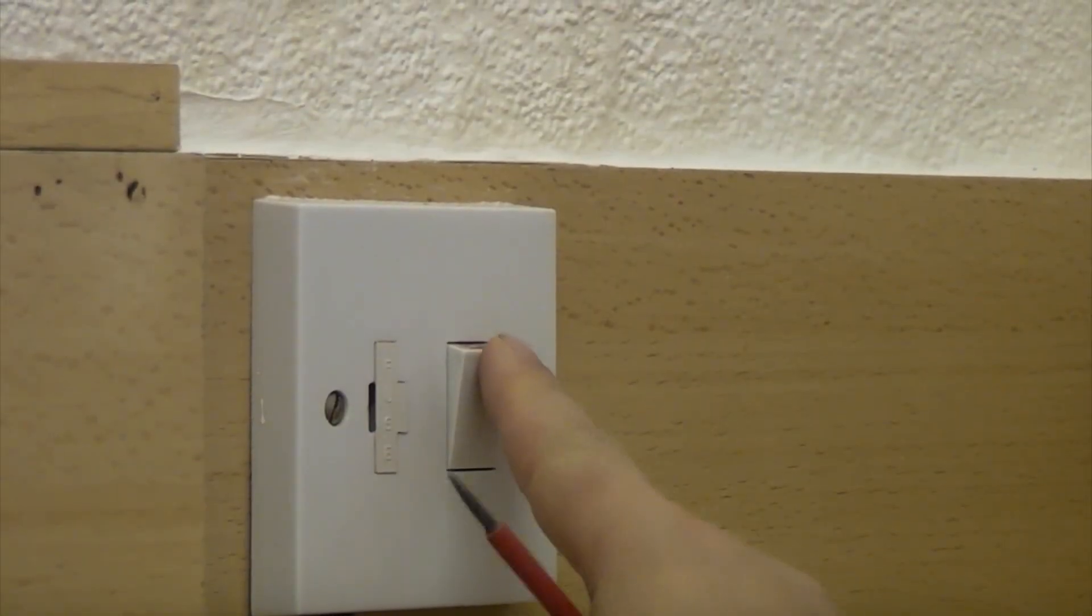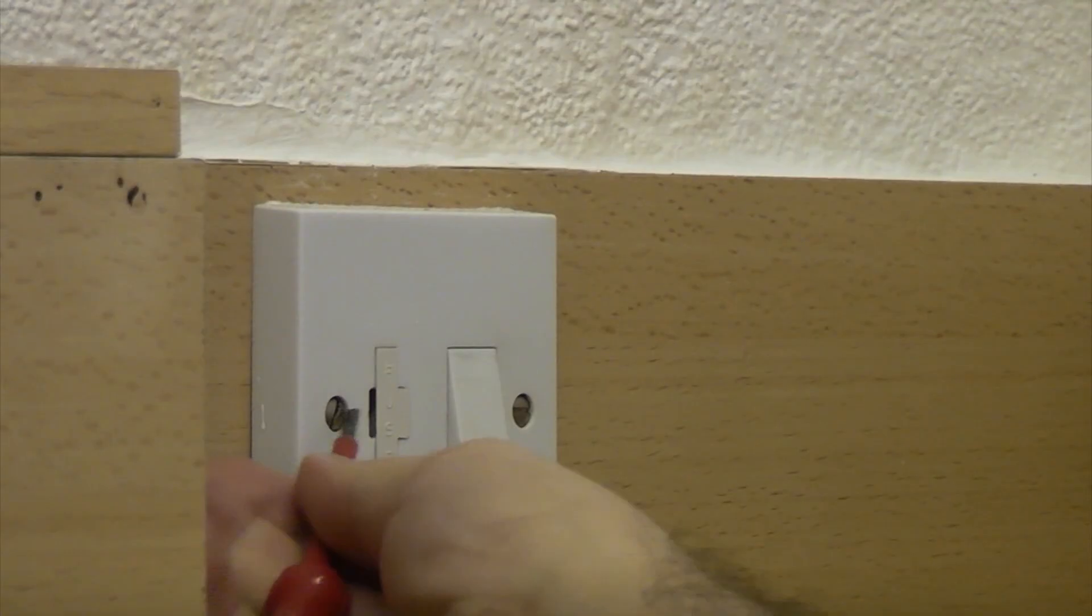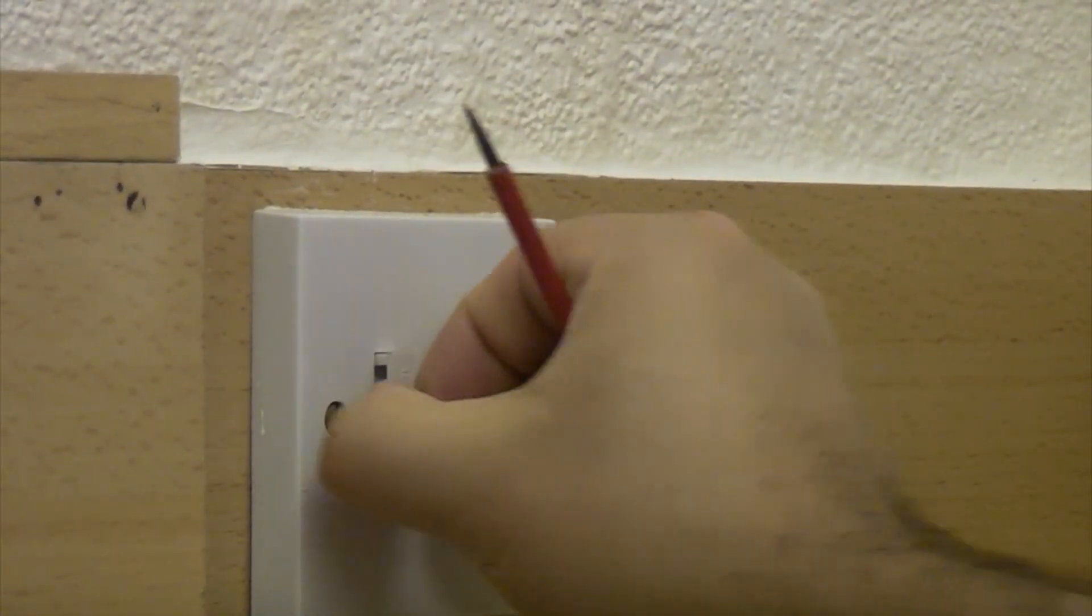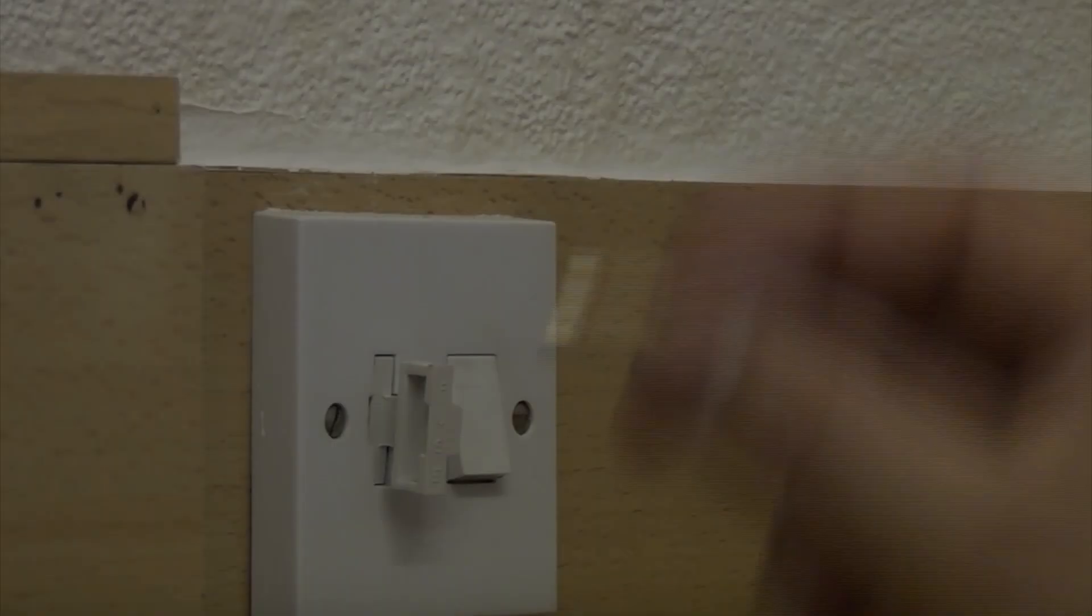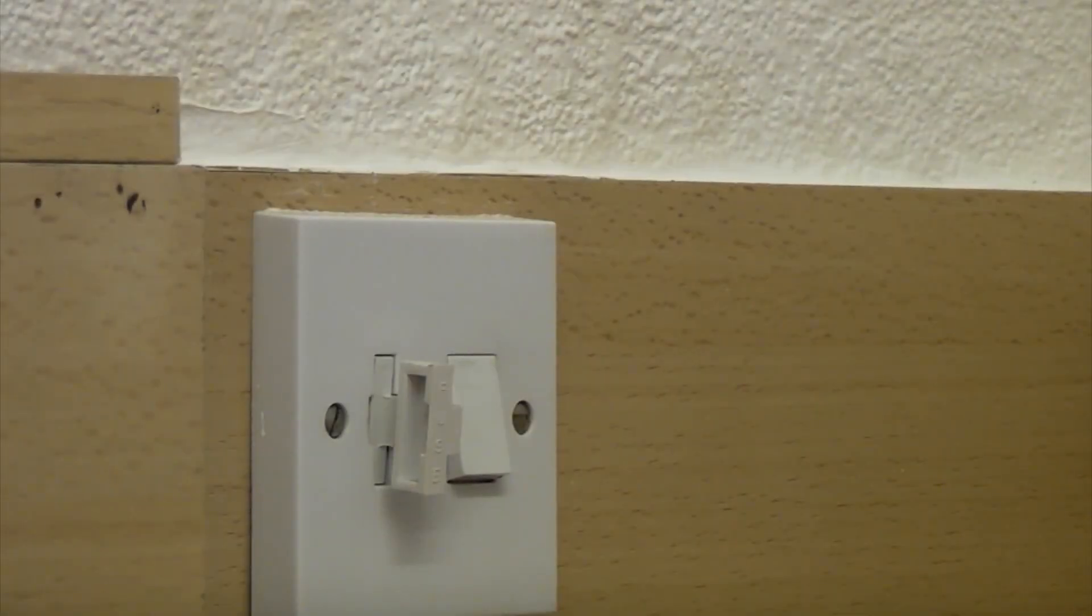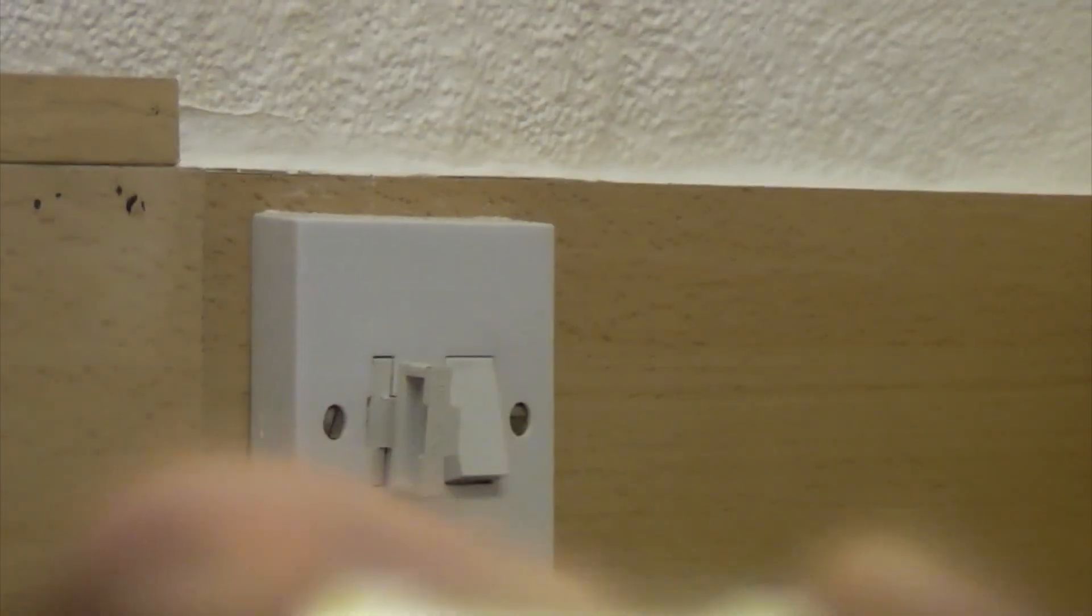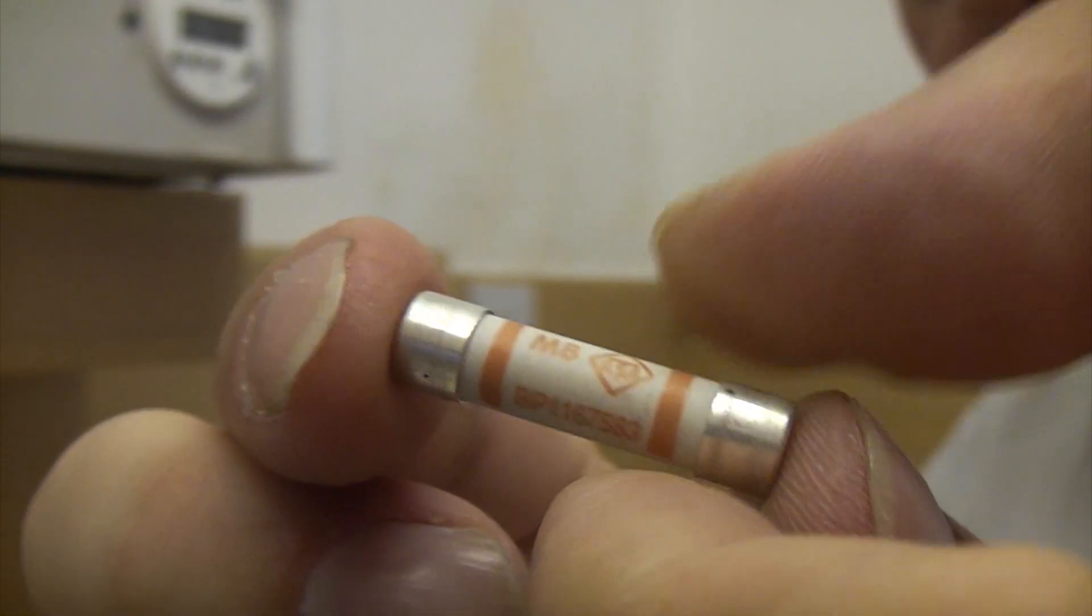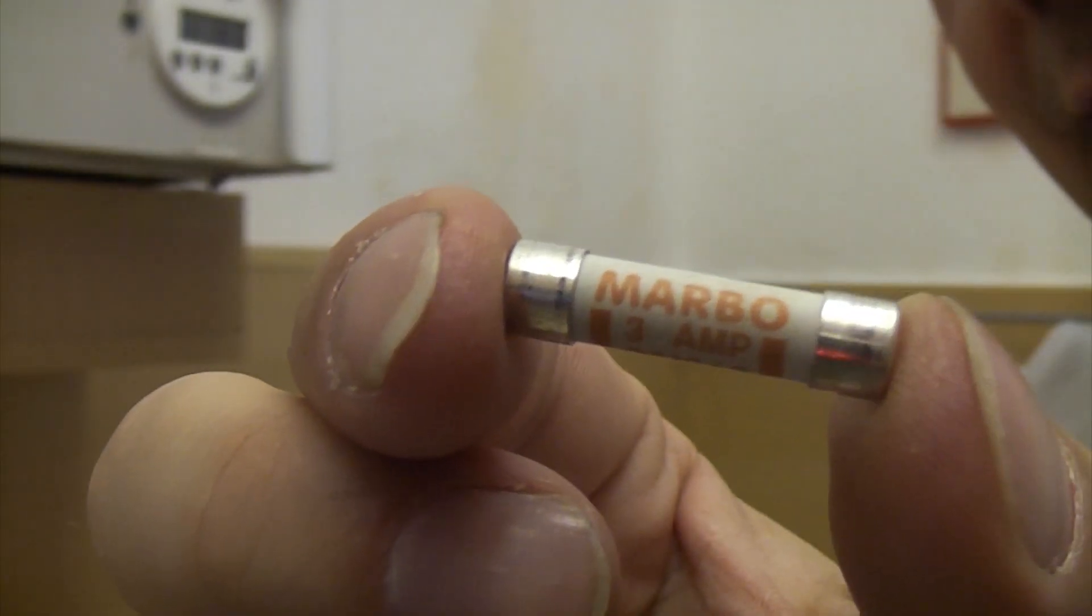So before we start, we are going to switch the boiler off, and we are just going to pop the fuse out of there just to be on the safe side. So we will take the fuse out, and also it is actually a 3 amp fuse, which is perfect because it should be less than 5 amps.